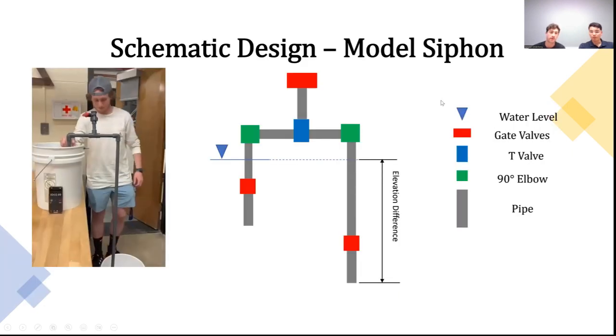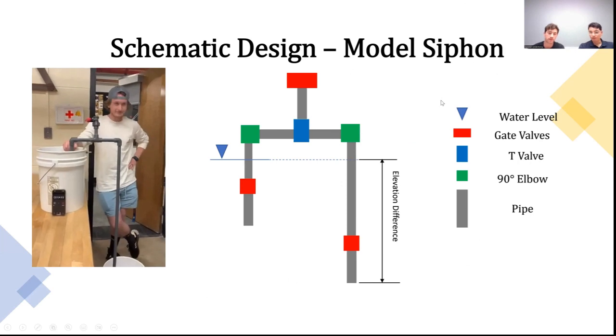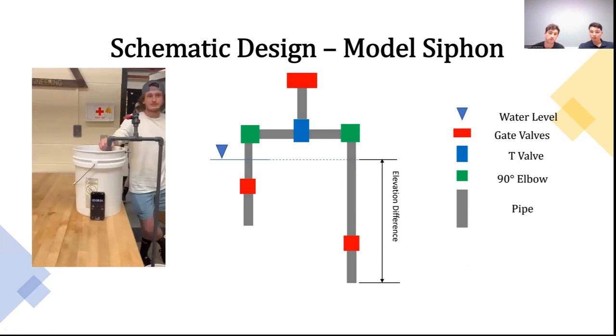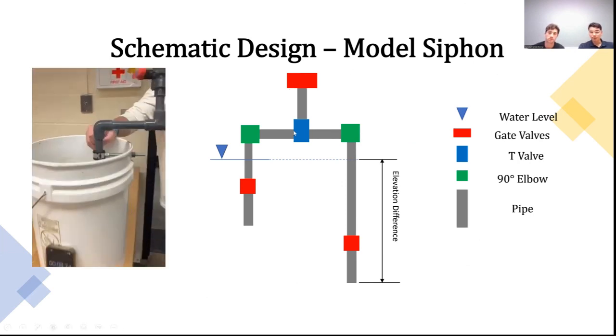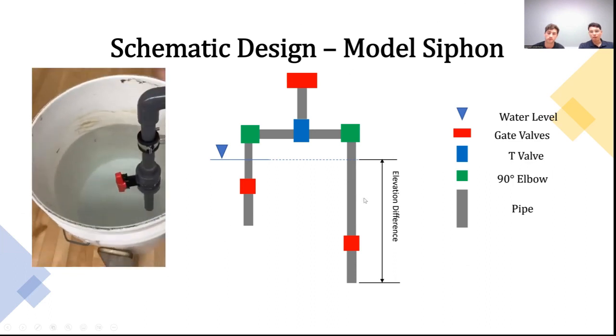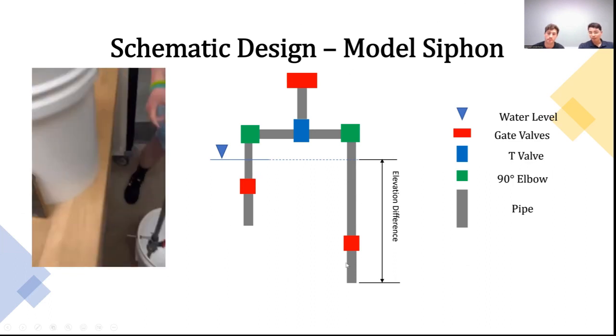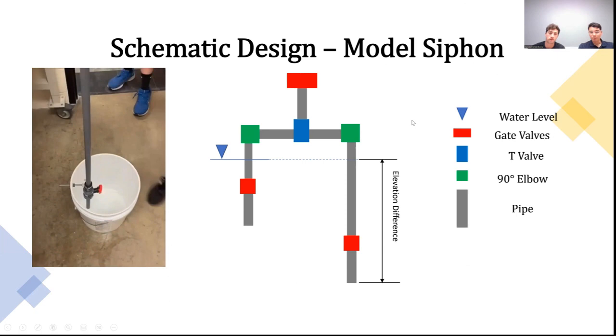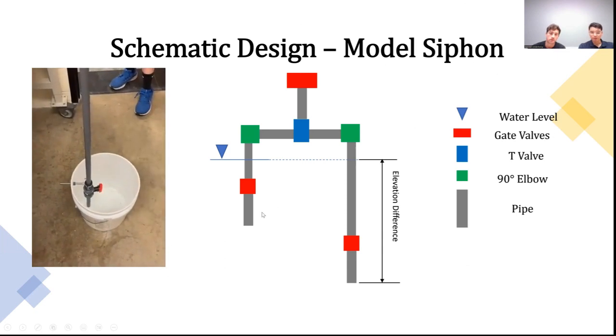In order to model our prototype, we decided to build a small siphon out of PVC. Water is funneled in through the top valve, filling the pipes up. Then valves on both sides are released at the same time, which causes a vacuum seal, which will then transfer the water from the upper to the lower reservoir.